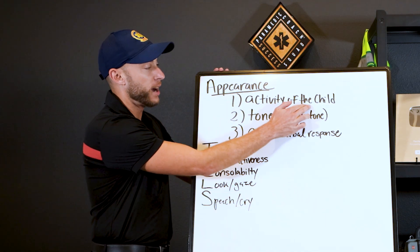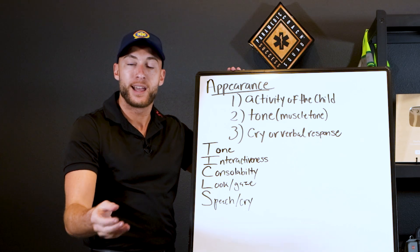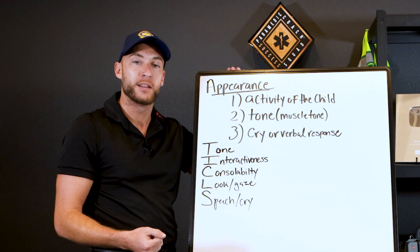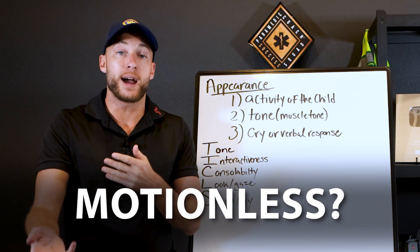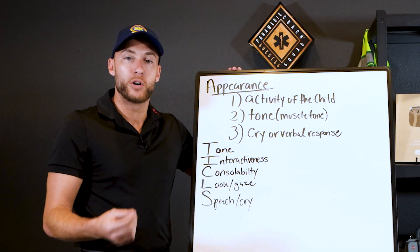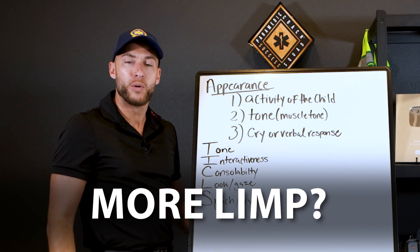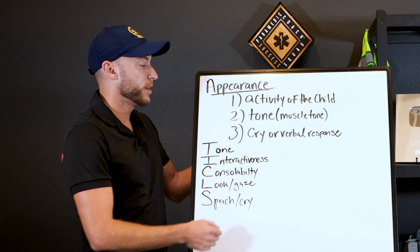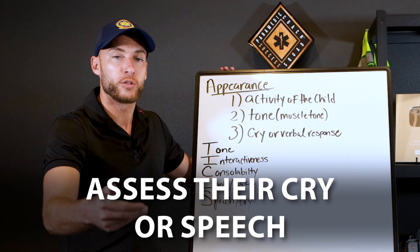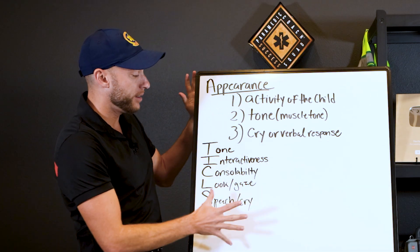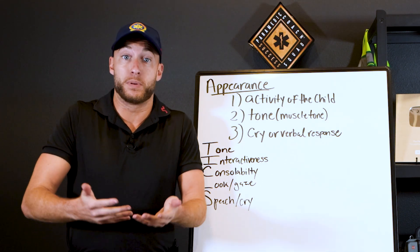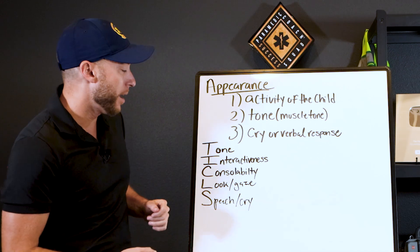First is the activity of the child. We look at the child or infant to see what the activity is like when we first walk on scene. Are they motionless? Are they interacting with others around them? Then tone — what is the muscle tone? Is it strong or more limp? Third is the cry or verbal response when you start to approach and talk to the child or infant. You'll notice a lot of these apply to an infant or newborn that cannot speak to you about complaints.